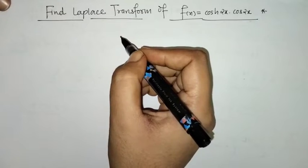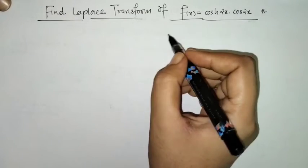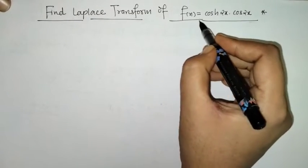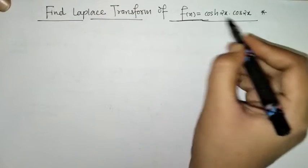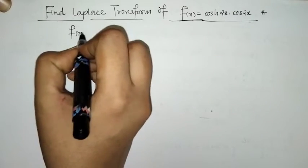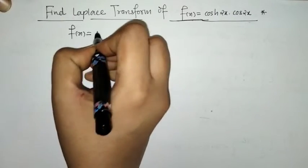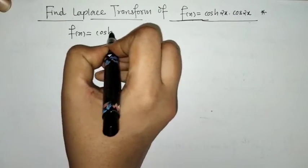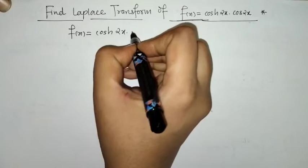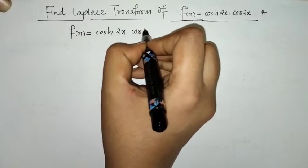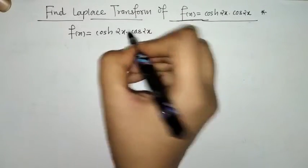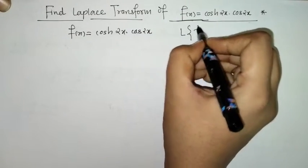Hello everyone, welcome to Unlock Maths. Today we have to find the Laplace transform of f(x), where f(x) is equal to cosh(2x) multiplied by cos(2x).